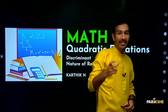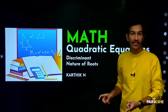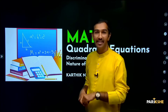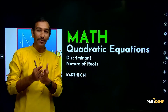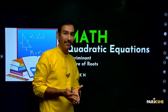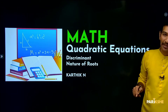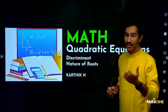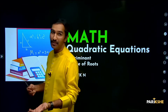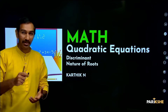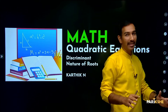Discriminant is represented by D, and D is equal to B square minus 4ac. This is the discriminant. Using the discriminant, we can find out what type of roots a quadratic equation has.